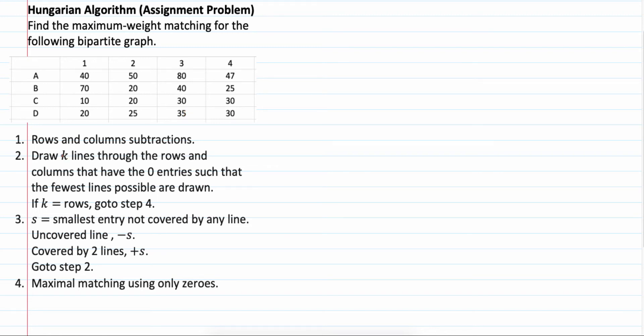Step 2. Draw k lines through the rows and columns that have the 0 entries such that the fewer lines possible. What's important is the fewer lines. If the number of lines is equal to the number of rows which is 4, skip step 3 and you just find maximum matching using the zeros.